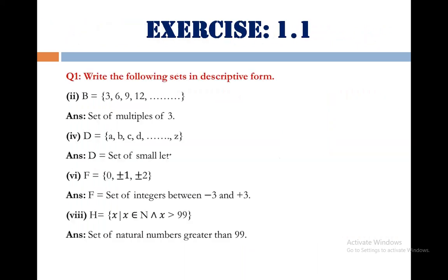Next we move towards the solution of the exercise 1.1 statement of question number 1. Write the following sets in descriptive form. The first part 2, set B equals 3, 6, 9, 12, so on. By looking at the shape of the elements, answer is very easy. The answer is set of multiples of 3.